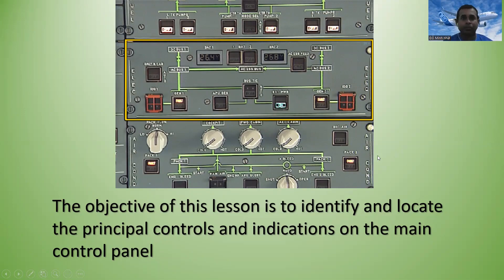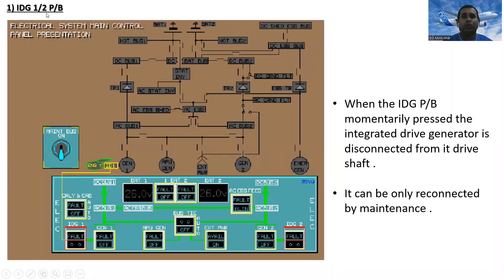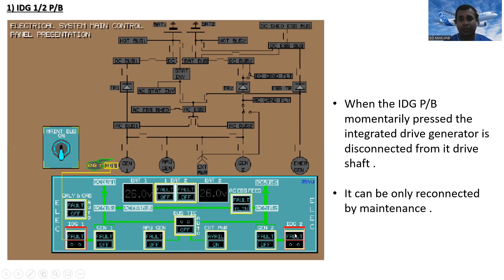The first one is the IDG 1 and 2 push buttons. When the IDG push button is momentarily pressed, the integrated drive generator is disconnected from its drive shaft. So if IDG1 or IDG2 push buttons are momentarily pressed, the IDG is disconnected from its drive shaft. It can only be reconnected by maintenance on the ground — it cannot be reconnected in flight.